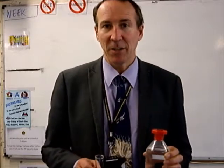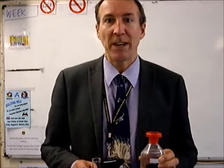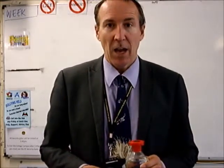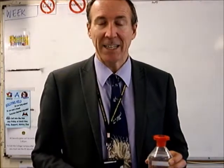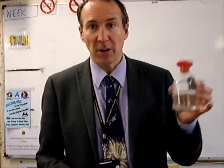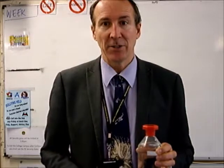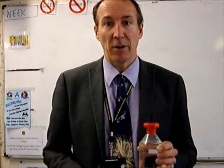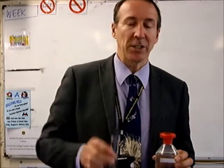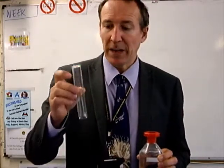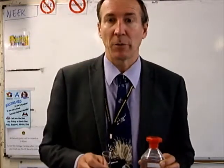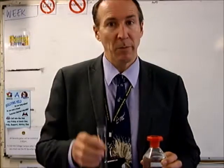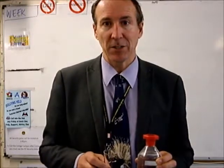Today we're going to look at enzymes and the rate of reaction of an enzyme. We're going to take an enzyme found in potato called catalase, which converts hydrogen peroxide into water and oxygen. We'll do the reaction in a tube with a little bit of detergent added, which allows the oxygen to form a froth on top of the tube. We'll measure the height of that froth to determine the rate of reaction.